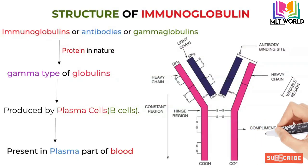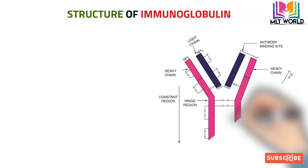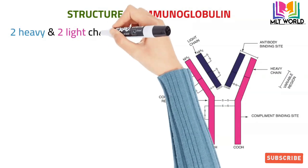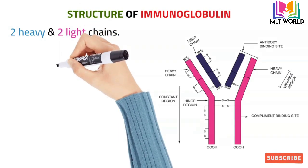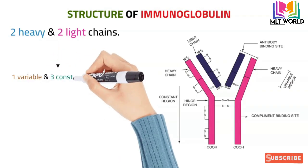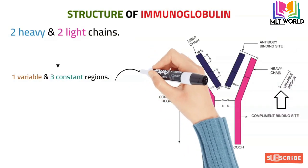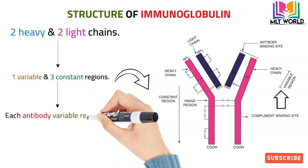Now we will see a quick review of the structure of immunoglobulins. Immunoglobulins consist of two chains: a light chain and a heavy chain. In the diagram, the blue color is the light chain and the red or pink one is the heavy chain. In the heavy chain there are three constant regions and one variable region. This variable region specifies the type of immunoglobulin — each immunoglobulin has a different variable region, but the constant regions are the same.